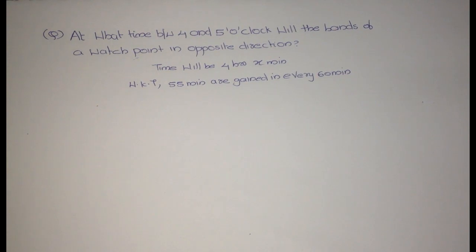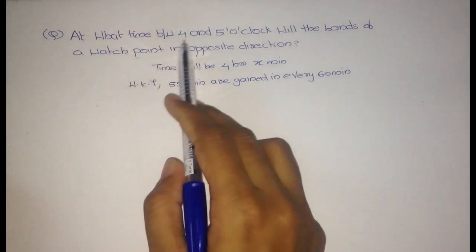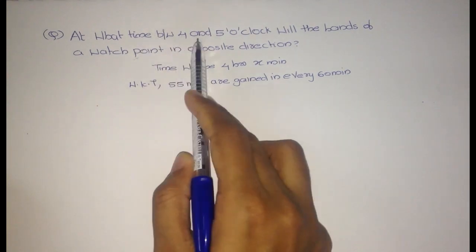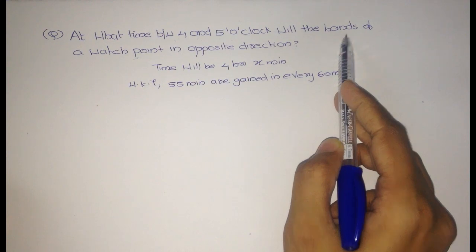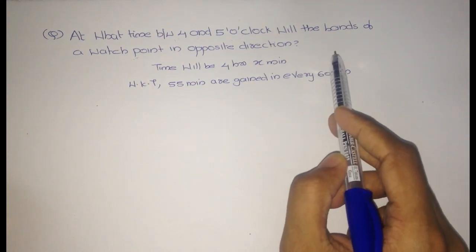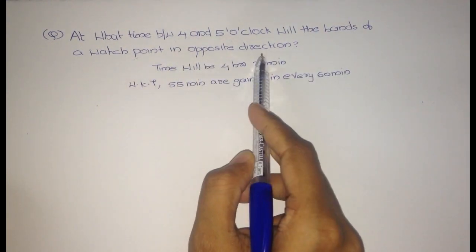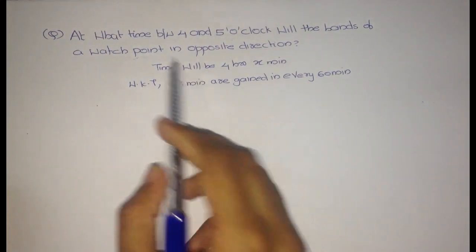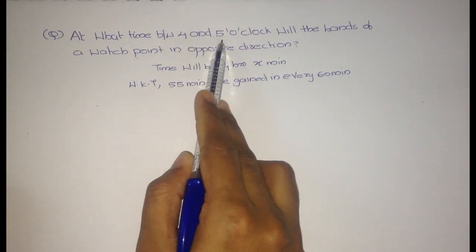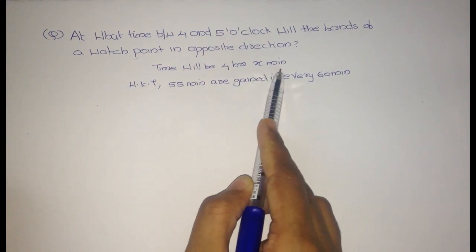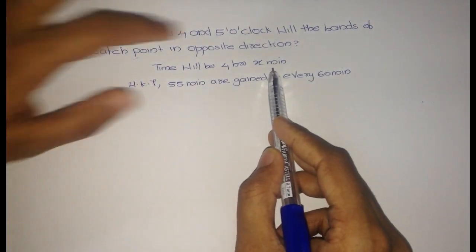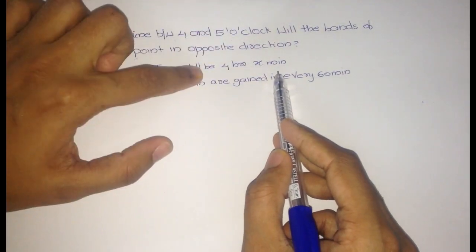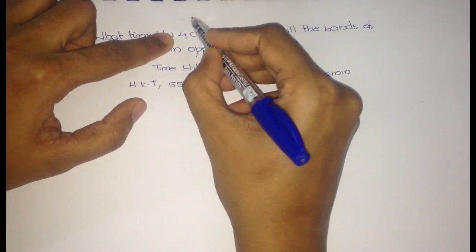Hi friends, today we are going to discuss clock problems. In this question we have to find the time between 4 and 5 o'clock when the hands — that means the minute hand and hour hand — are in opposite direction. First we have to understand that between 4 and 5 means 4 hours X minutes. We cannot take 5 hours X minutes because the clock is going in this direction.